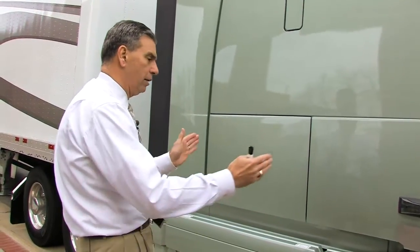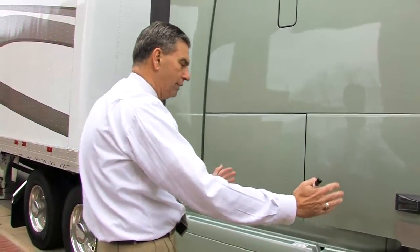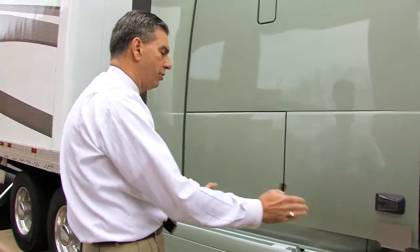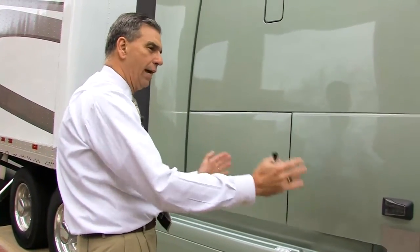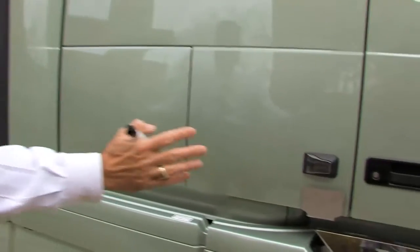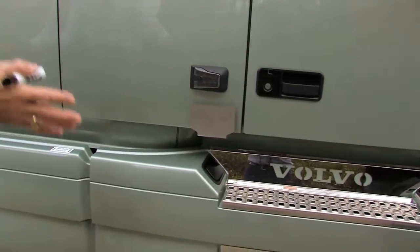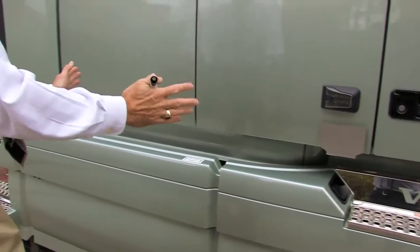Something interesting is the fact that a lot of times you'll see instead of chassis fairings, you'll see a lot of packaged goods along here. You have fuel tanks, APUs, and everything else. If you package a lot of stuff in here and prevent the air from going underneath the chassis, it's just as good.